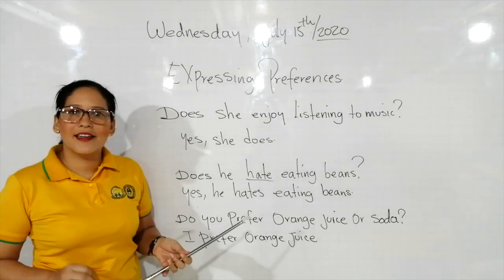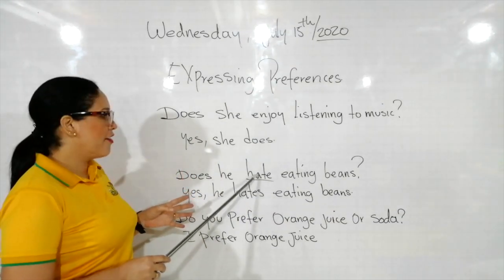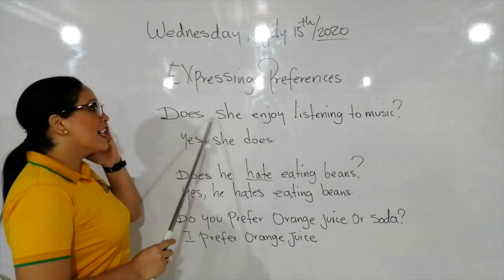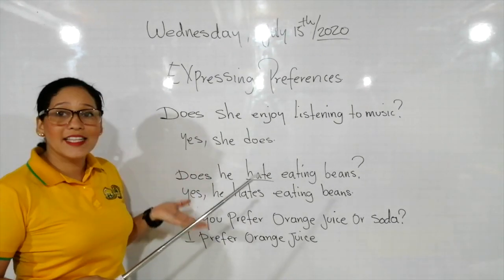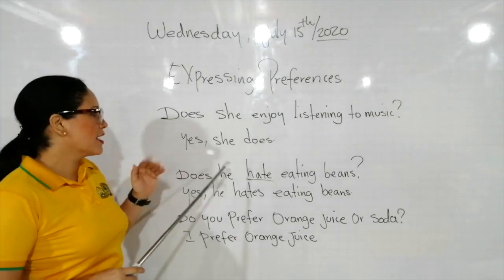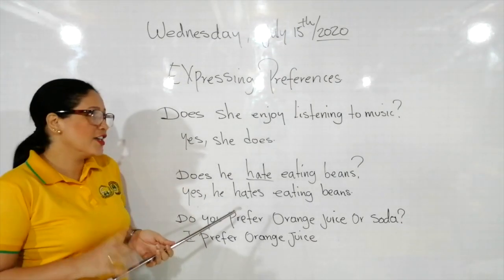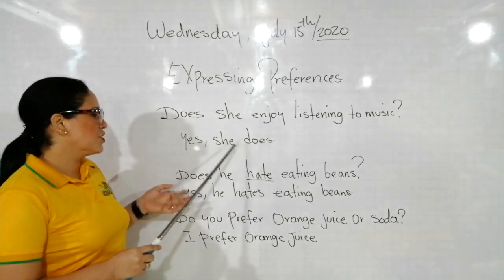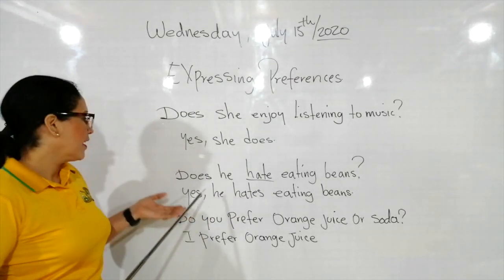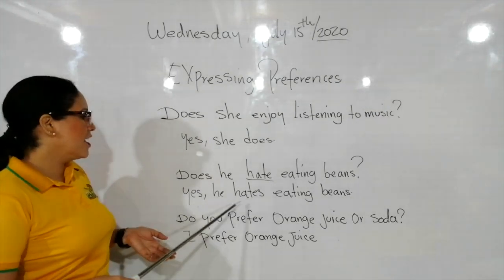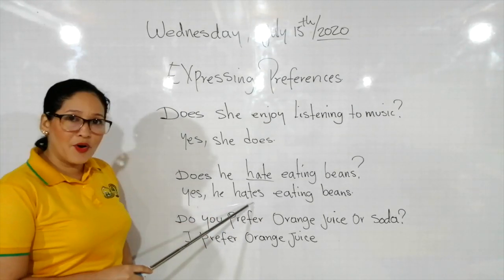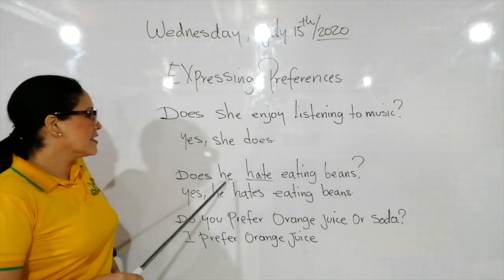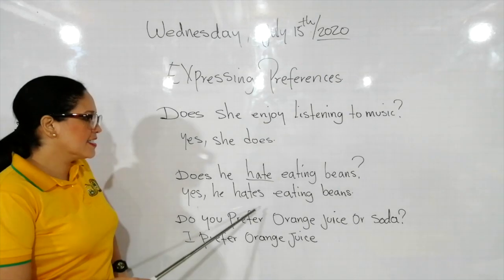Vamos a hacer ejercicios en tercera persona con el verbo hate y el verbo enjoy. Repite after me: does she enjoy listening to music? — ¿disfruta ella escuchar música? Yes, she does. Does he hate eating beans? — ¿él odia comer frijoles? Yes, he hates eating beans. Como pueden ver, le agregamos -s al verbo hate porque está en forma afirmativa y en tercera persona del presente simple.